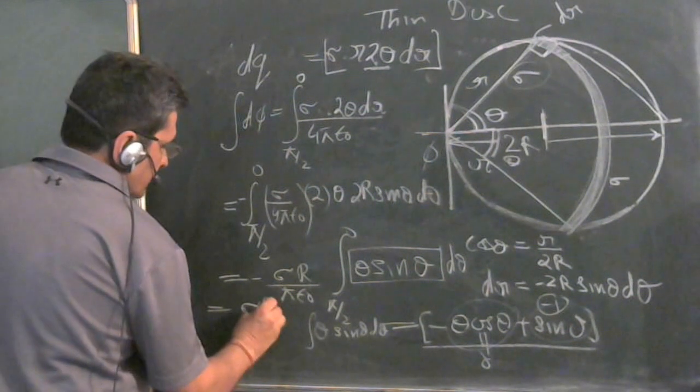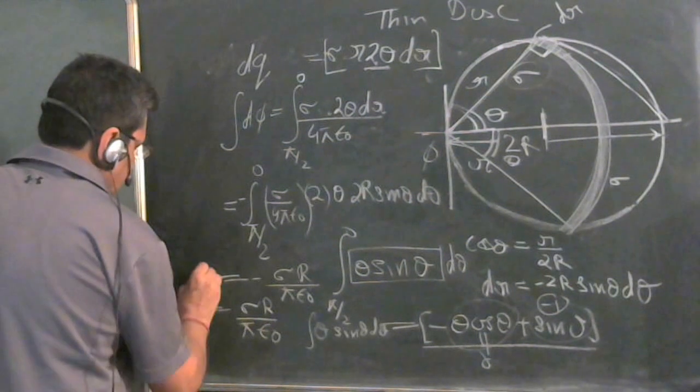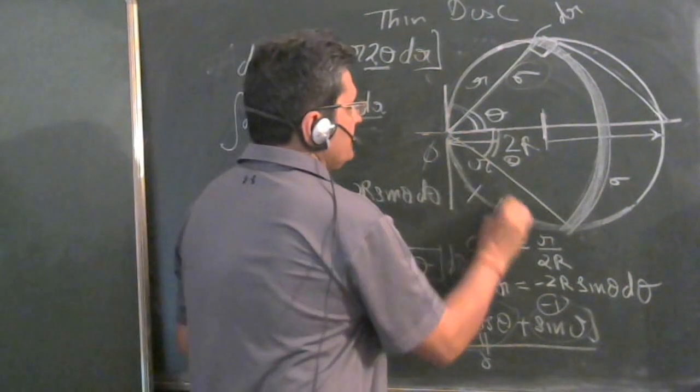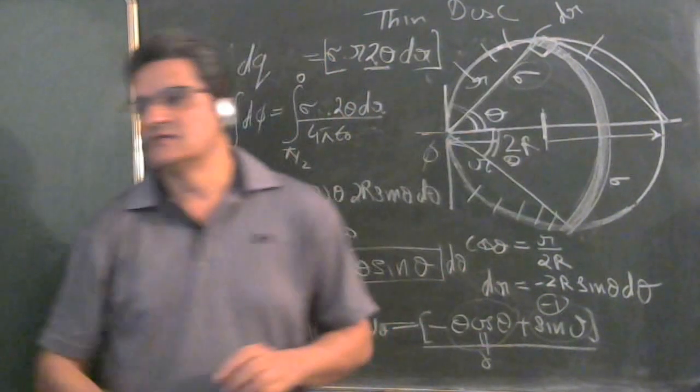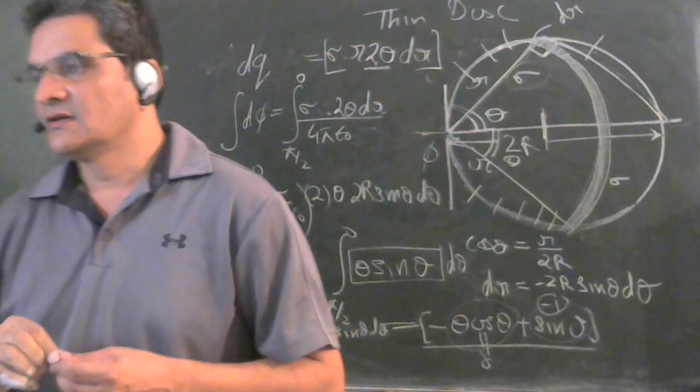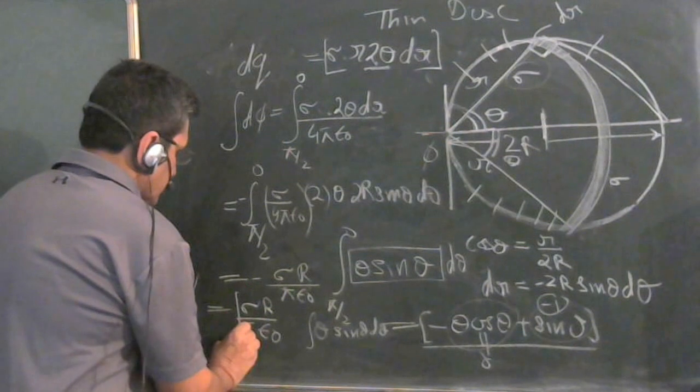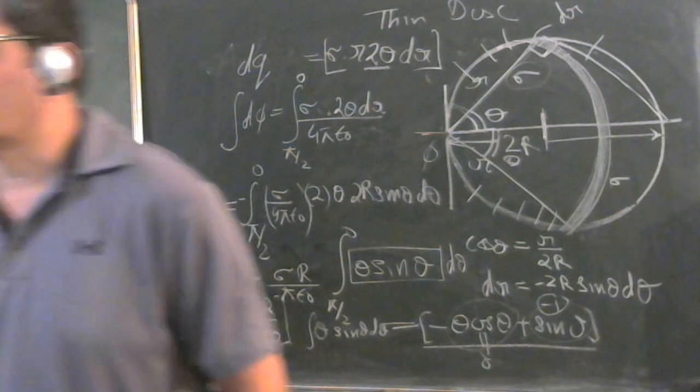So sigma r upon pi epsilon_0 is the potential at any point. It can be any point on the surface of the disk and you will get the same result. The value is sigma r upon pi epsilon_0. That's all. Thank you.